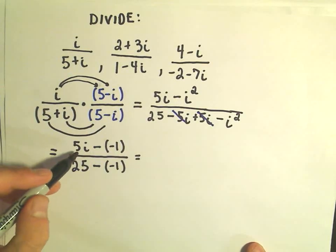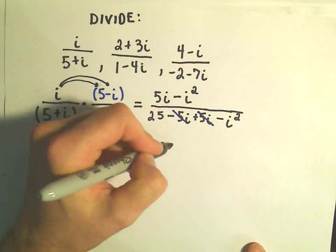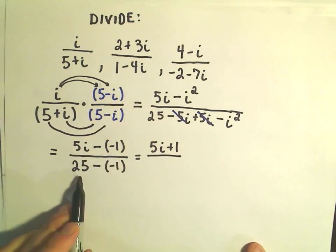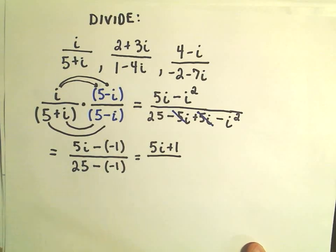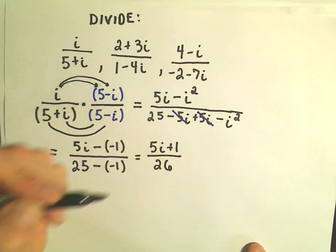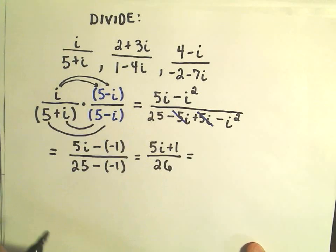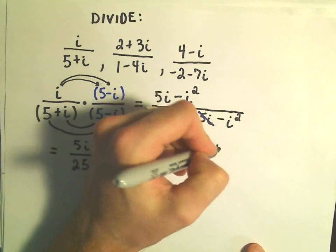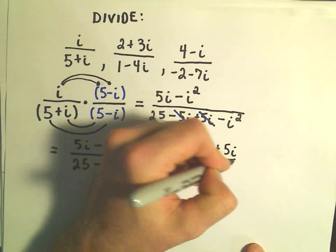And then in the numerator, we have 5i plus 1 over 25 plus 1, which will give us 26. And I'm going to break this up a little bit more: 1 plus 5i over 26.